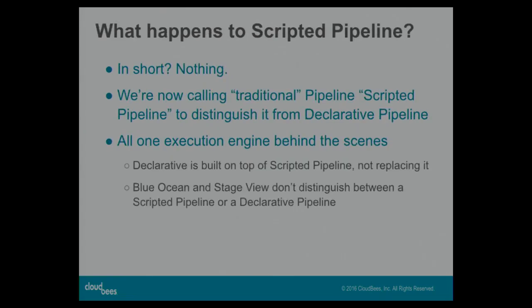An important thing to touch on with declarative pipeline is what this means for scripted pipeline. In practice, it doesn't mean anything — both still exist. Declarative pipeline is very much built on top of scripted pipeline. It's not a separate thing; it's a new syntax for pipeline. We're now calling traditional pipeline 'scripted pipeline' so you can distinguish between the two. The visualizations like Blue Ocean and Stage View don't see any difference between a run of a declarative pipeline versus a scripted pipeline, because they're all still just generating stages and running steps within stages.